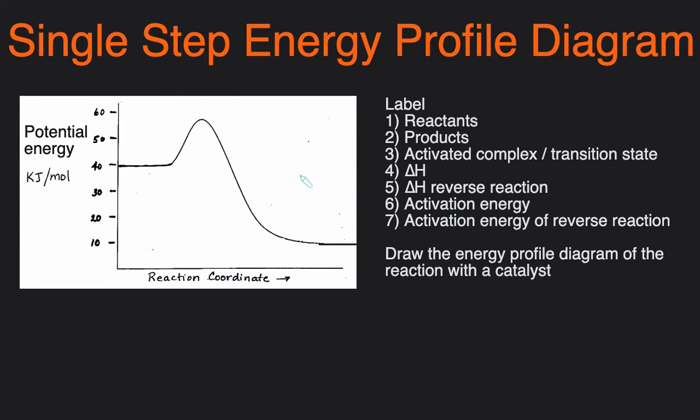We're going to label the following on this energy profile diagram. So first, label the reactants. The reactants is the starting line. So here are the reactants. You can see the reactants has a potential energy of about 40 kilojoules per mole.